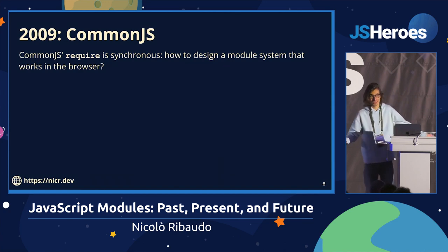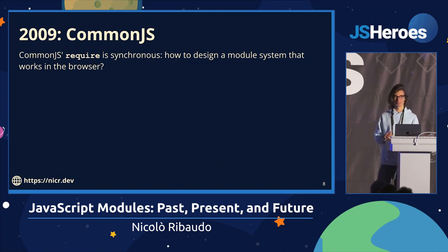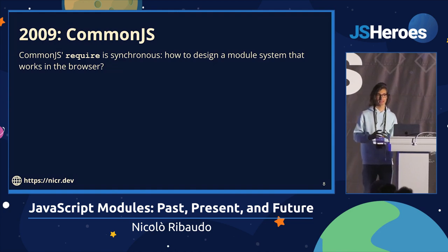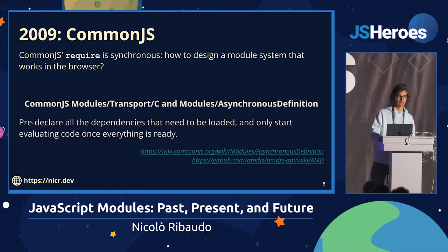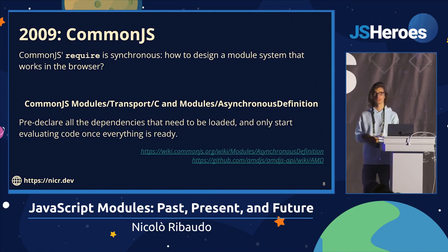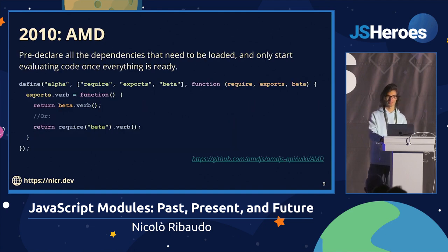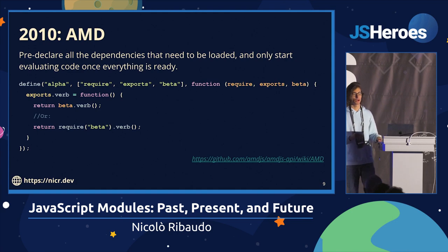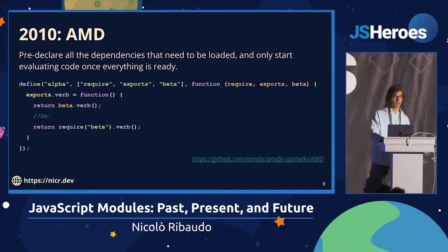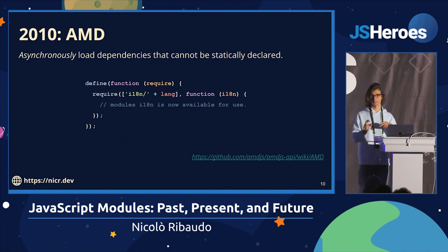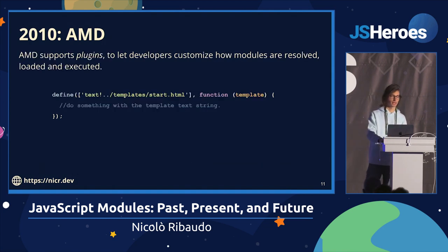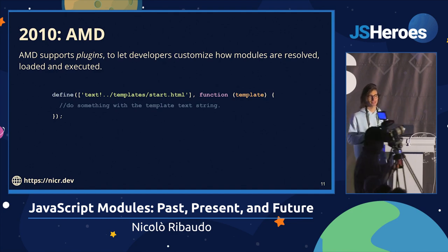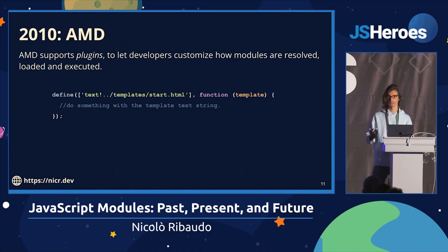CommonJS had a problem: it was synchronous. For browsers, this is not really good because you need to go through HTTP requests to load your files, and that needs to be asynchronous so you don't block your UI while loading dependencies. So this group started working on something called Modules/Asynchronous Definition, now better known as AMD. It allowed pre-declaring all your dependencies so the module loader could first download them all, and then execute your runtime code after everything was loaded.